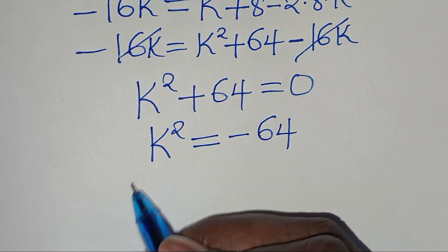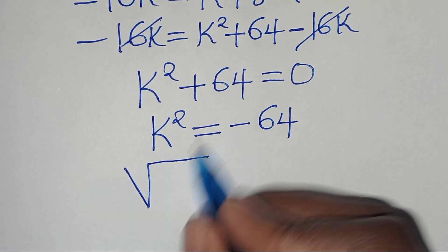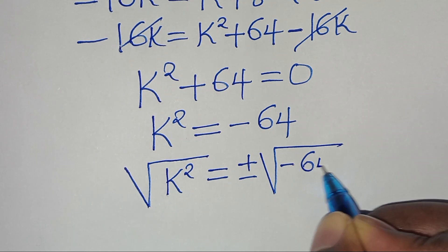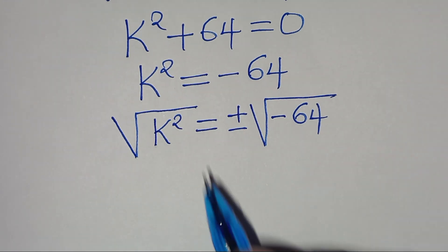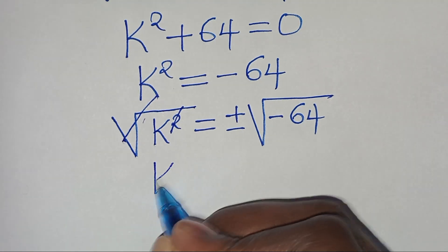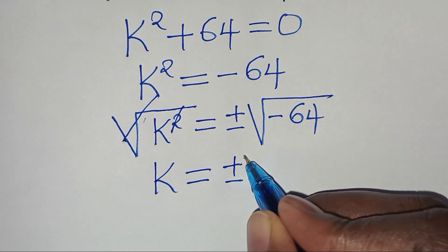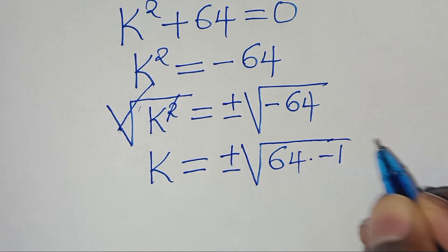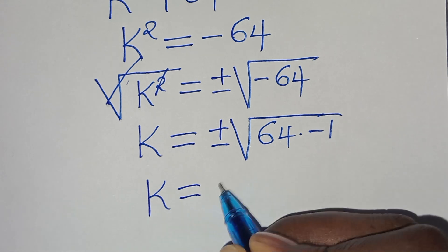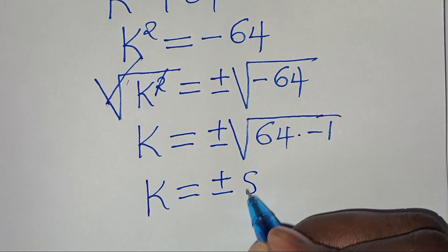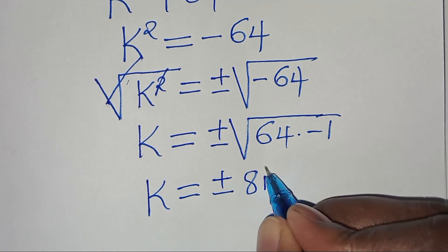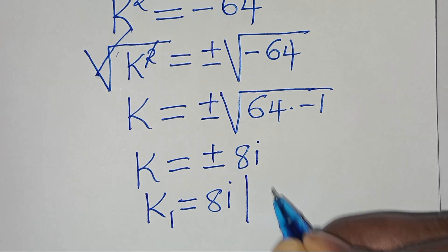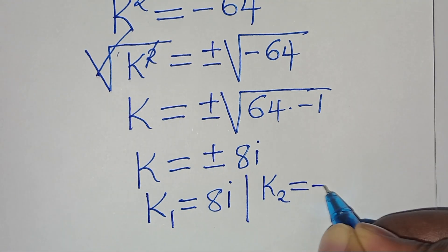Now we solve for k by taking square roots on both sides: the square root of k² equals plus or minus the square root of minus 64. We can express the square root of minus 64 as the square root of 64 times minus 1, where the square root of 64 is 8 and the square root of minus 1 is i. So k equals plus or minus 8i. We have two values: k₁ equals 8i and k₂ equals minus 8i.